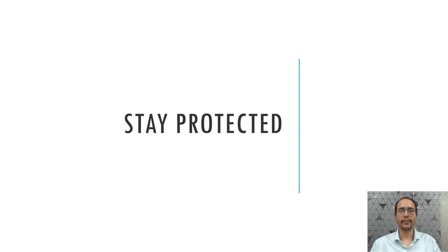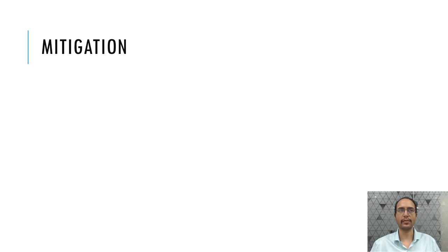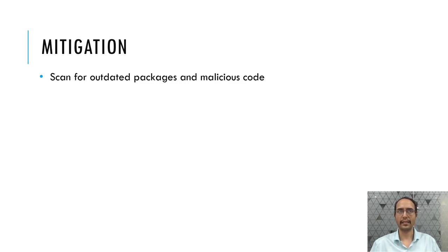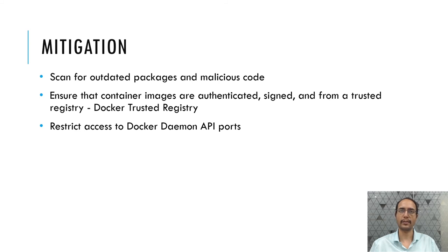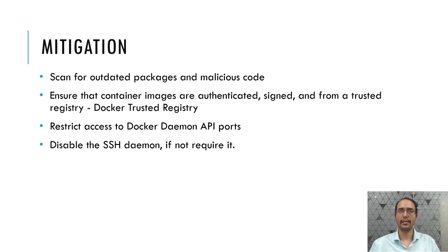To stay protected from these threats, let's look at mitigation techniques that can help reduce the impact. Containers should have updated applications and should not execute vulnerable packages inside them. Docker images should be pulled from authenticated and trusted sources. Attackers will always look to access containers via publicly exposed ports, whether Docker daemon API ports or application-specific ports, so it's important to restrict access to such ports. SSH should be disabled if not required, to avoid SSH hijacking and lateral movement.